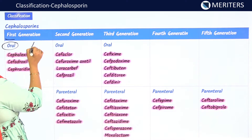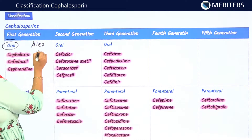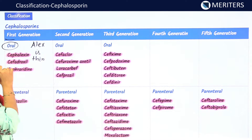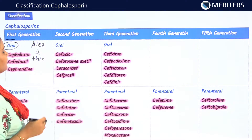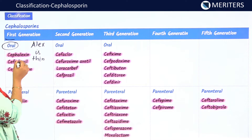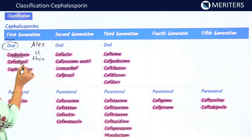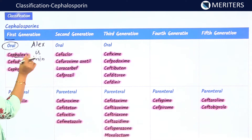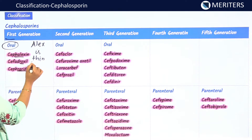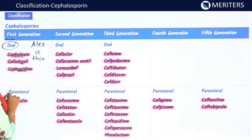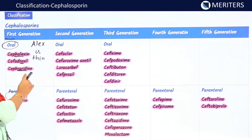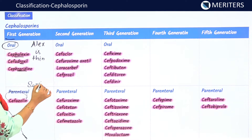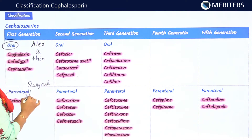For first generation oral drugs, use the mnemonic 'Alex is thin.' So: cephalexin — Alex; cephadroxil — somewhat similar; and cephalothin — thin. For the parenteral first generation, remember cefazolin, which is used in surgical prophylaxis.